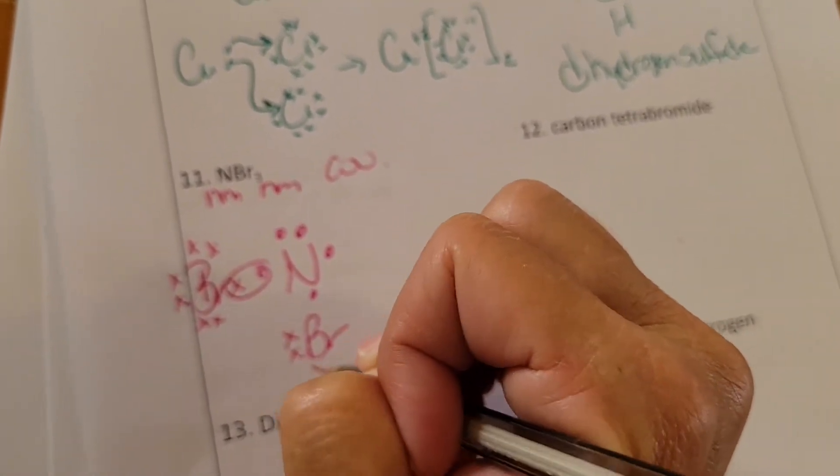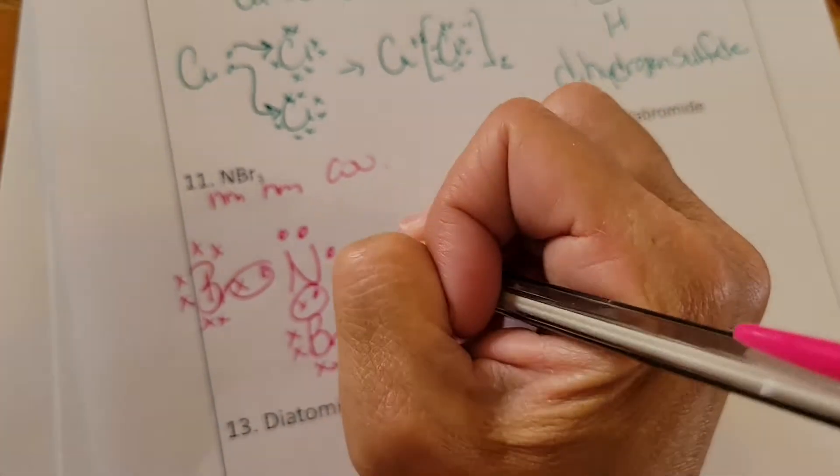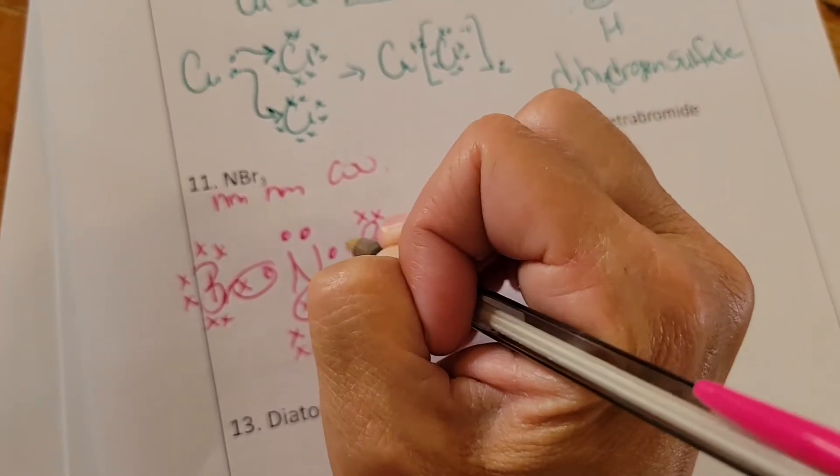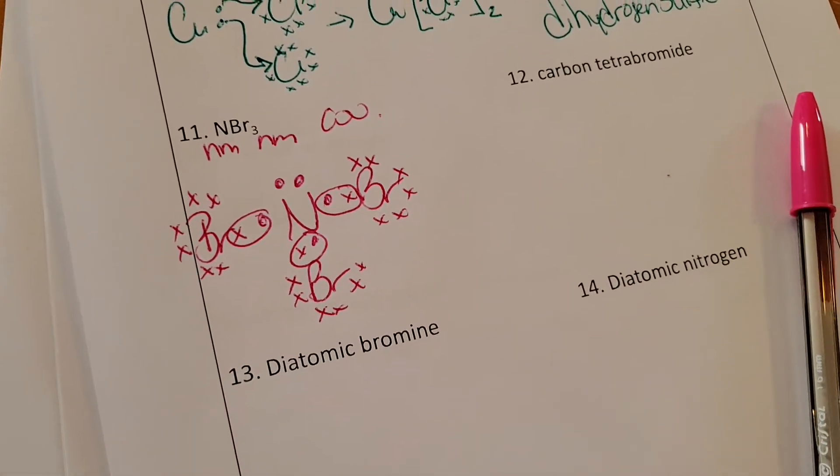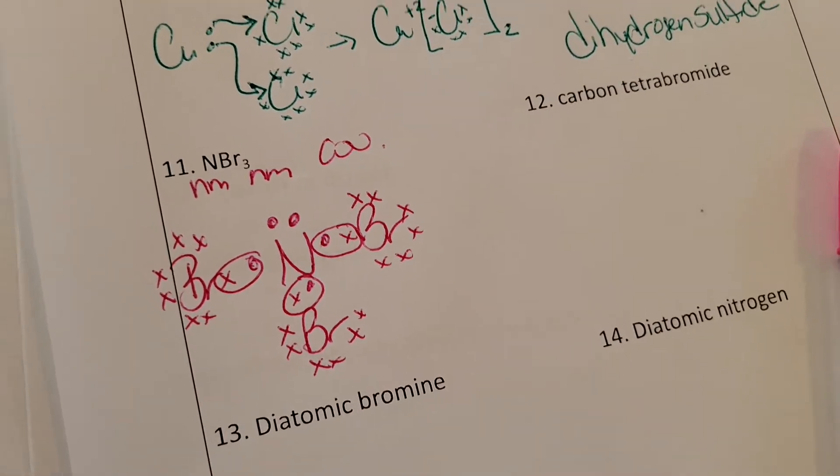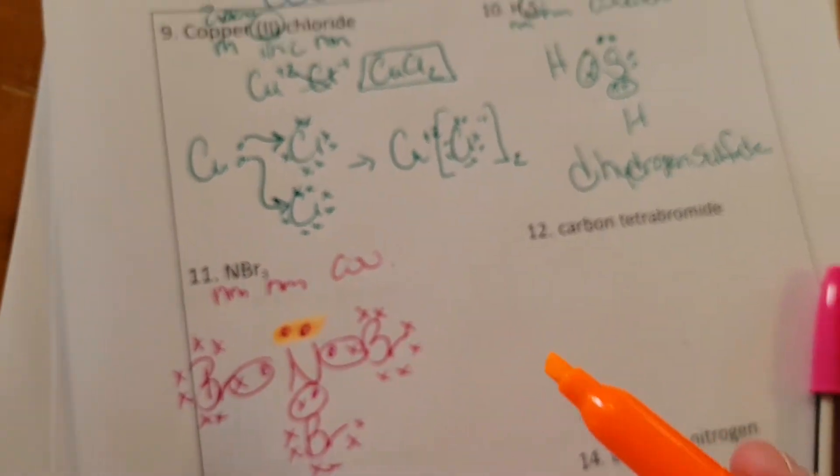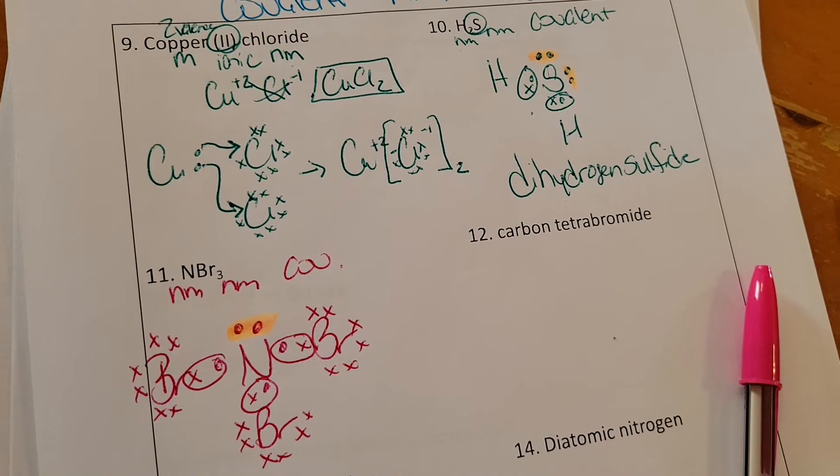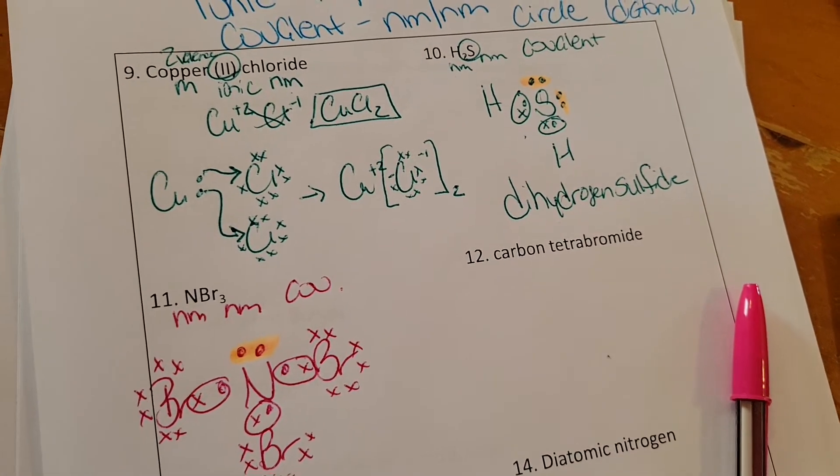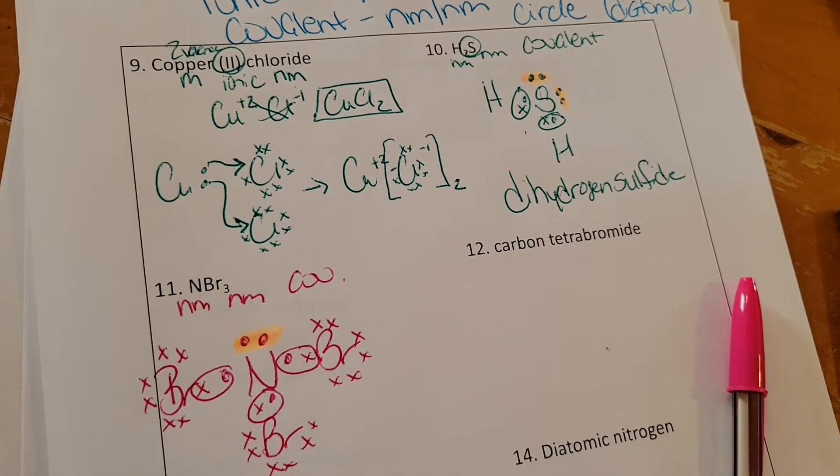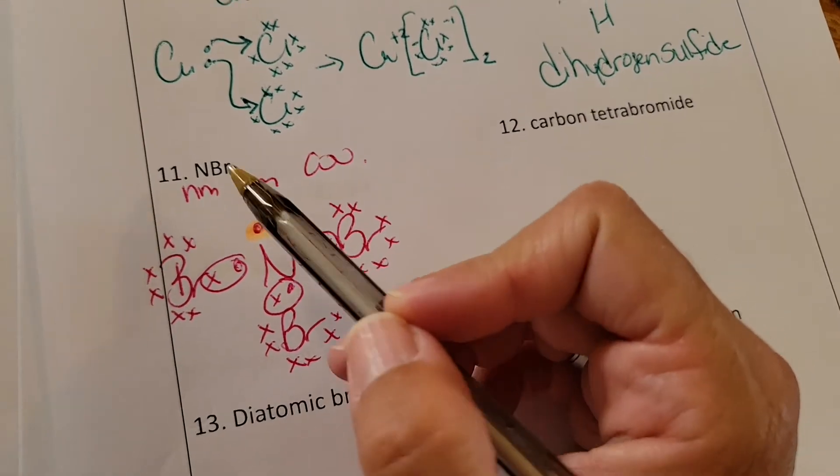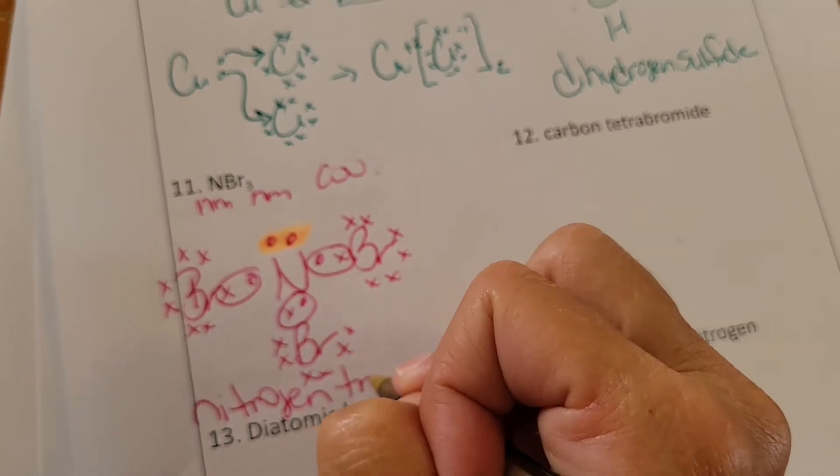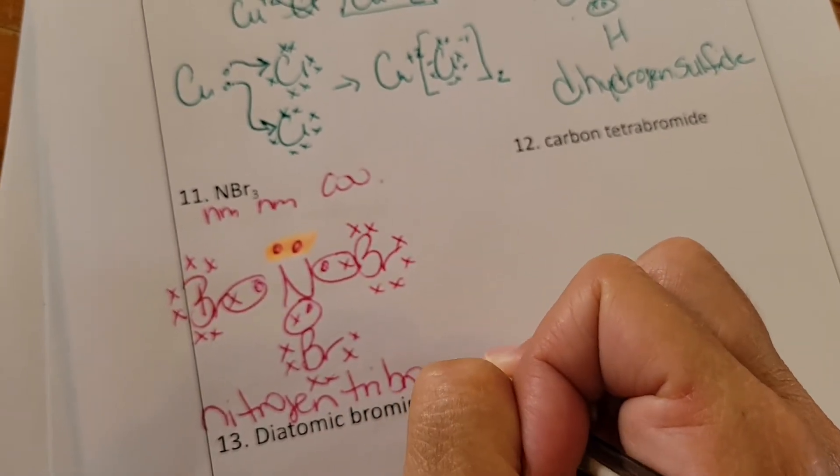Bromine, one, two, three, four, five, six, seven. Share. And then you do end up with one of these unshared pairs on the central atom. Same thing up here, I forgot. You do end up with two unshared pairs. Just for future reference, we'll use that idea later. And then to name it, we have nitrogen tribromide.